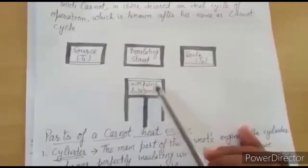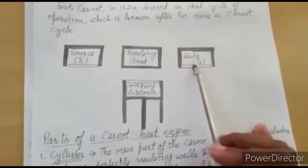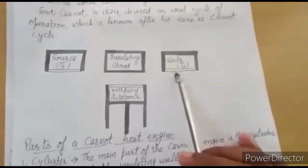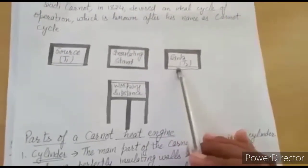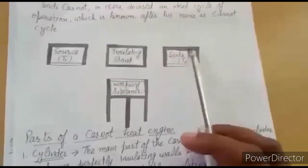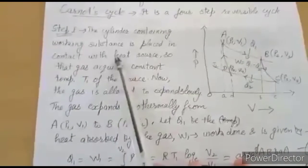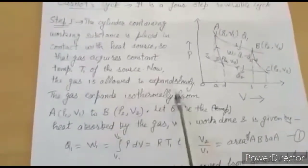Then in the third step, we place the working substance on the sink. It rejects heat to the sink, but the temperature of the sink remains constant because it has infinite thermal capacity. In the first step, we place the substance on the source at temperature T1, and isothermal expansion takes place.